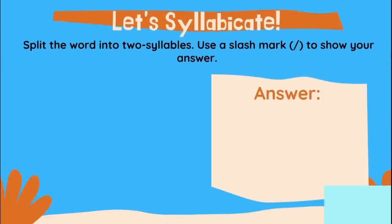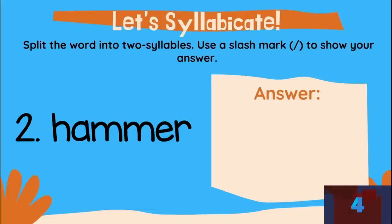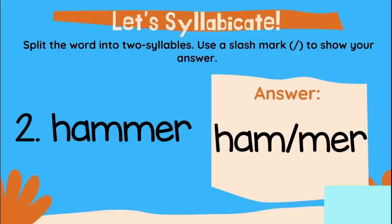Let's have our second word: hummer. Syllabicate the word hummer. Type now your answer in the comment box. And the correct syllabication of the word hummer is hum/mer. Did you get this one? Wow, very good.